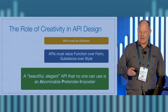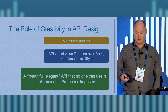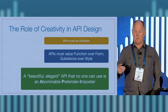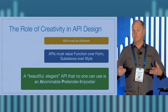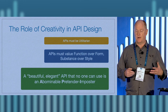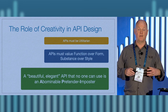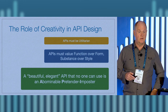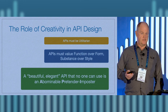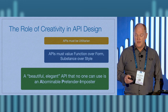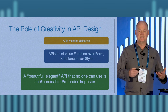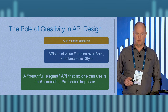APIs really must be more utilitarian. Both Bill and Paul talked about style and having a unique voice — there's something to be said for that — but APIs really need to value function over style, substance over style. It's important to be more utilitarian in API design. We've all heard that beauty is in the eye of the beholder, but a beautiful, elegant API that's very stylistic but which no one can use is not really a good API. It's what I would call an abominable pretender imposter instead.